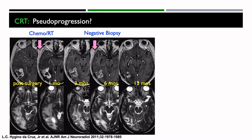Here's another example of pseudoprogression. A patient treated with chemo-radiation therapy — looking at that post-contrast image, it looks like they're definitely having some continued and possibly increased enhancement. For this reason, this patient also went back to surgery and the biopsy came back negative. If you had waited some months later, you would see that the tumor did regress. So it's a very difficult, confounding question for the treating physicians with regard to pseudoprogression.